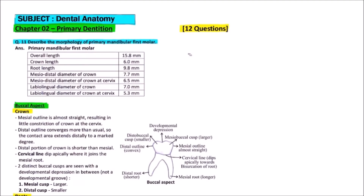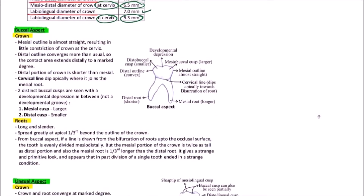Hello friends, I am Dr. Prashant Sharma and you are watching MediCoast Hub. In this video on dental anatomy, I am going to discuss: describe the morphology of primary mandibular first molar. The overall length is 15.8 mm, in which the crown is 6 mm and the root is 9.8 mm long. The mesiodistal diameter of the crown is 7.7 mm and at the cervix it is 6.5 mm. The buccolingual diameter of the crown is 7 mm, while at the cervix it becomes 5.3 mm.